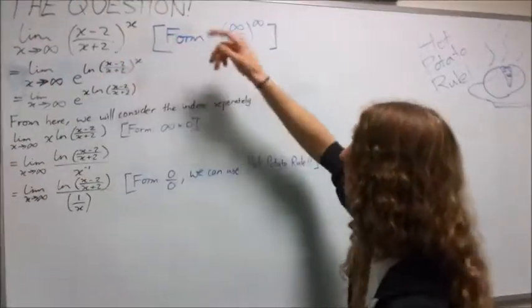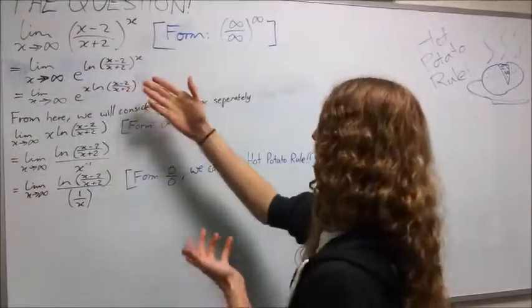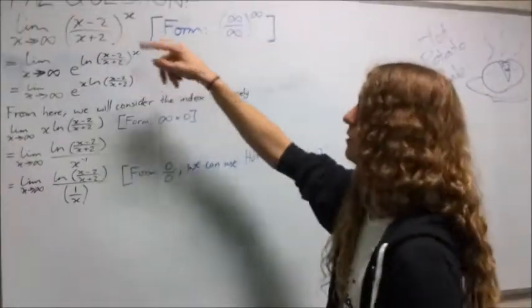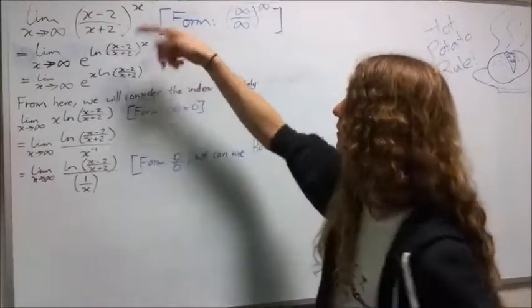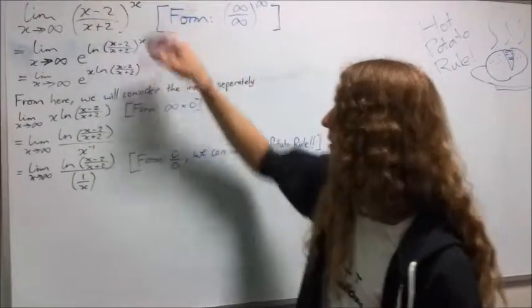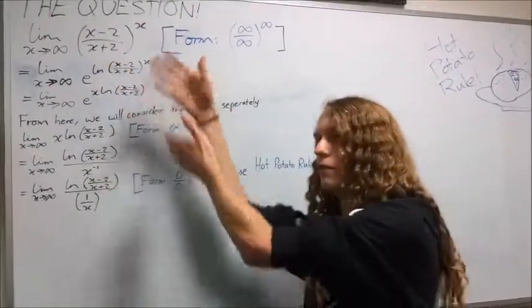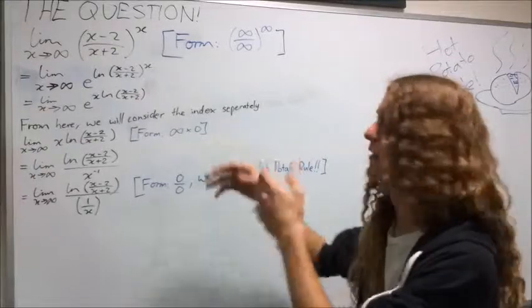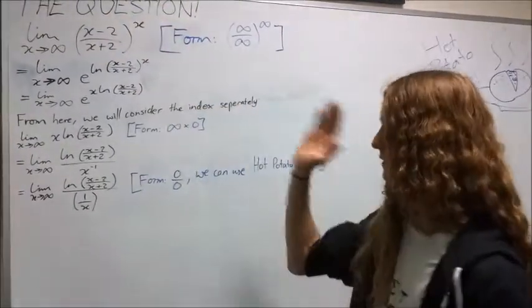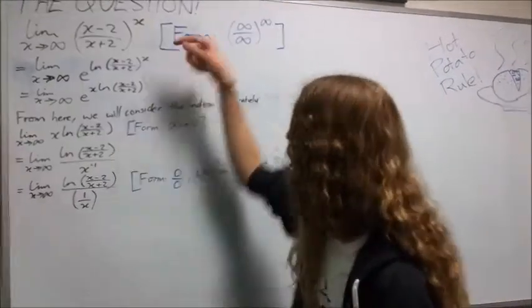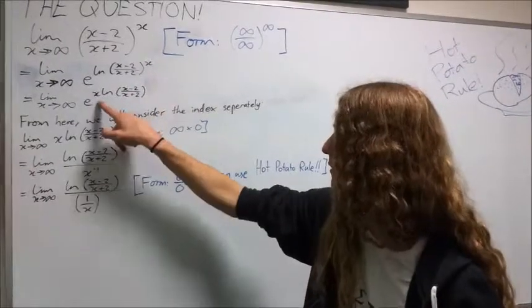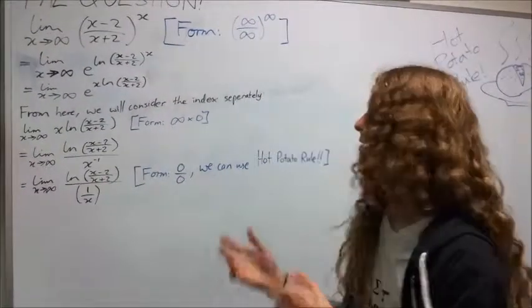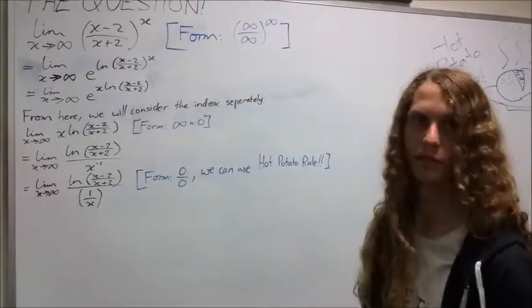So we make it the limit as x approaches infinity of e^(ln of that whole thing), because since it's e to the power of a log, it's just going to cancel itself out. It's the exact same thing, just in a different format. So we can take the x down out front of the logarithm. That's just a rule that everyone knows, or what we should know doing engineering.